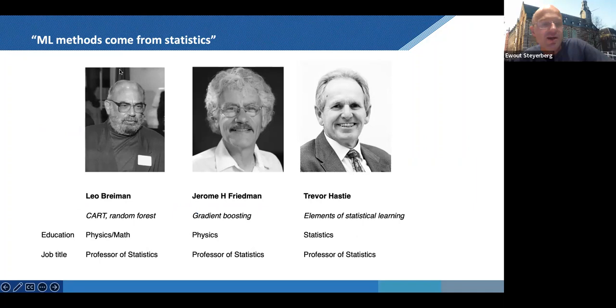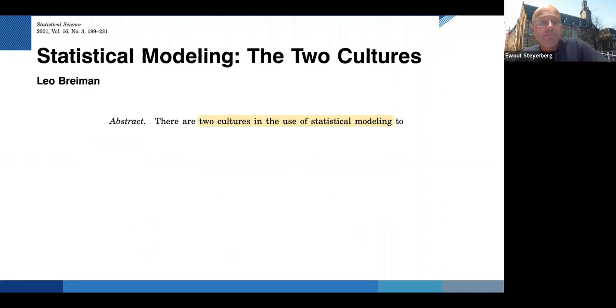So one solution is to say, okay, let's just say that logistic regression is machine learning. And that is this tweet. Then you just fit everything in the machine learning. And there's something to say for that, I think. Because these machine learning methods come from statistics. Actually, these are really founding fathers of this field. Leo Breiman, and we'll have a screenshot of one of his famous papers. A great statistician who also really evolved towards modern methods, current methods, random forest especially. Friedman, gradient boosting, professor of statistics originally. And Trevor Hastie, also professor of statistics. And this is really a bible for statistical learning, the book that he wrote.